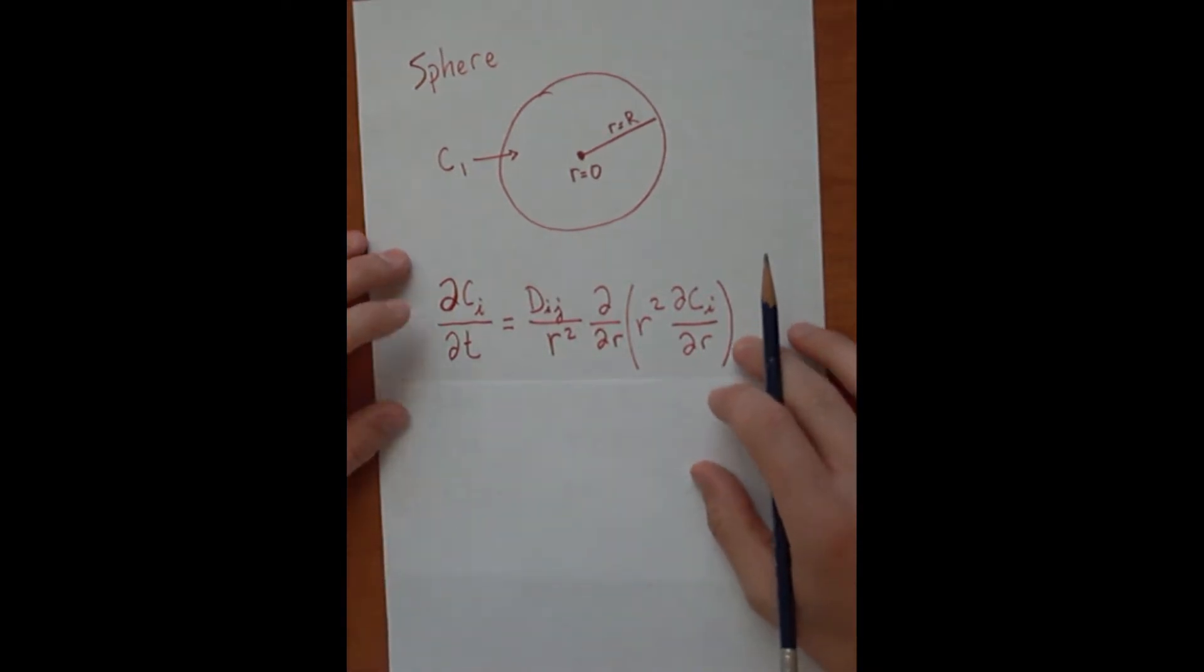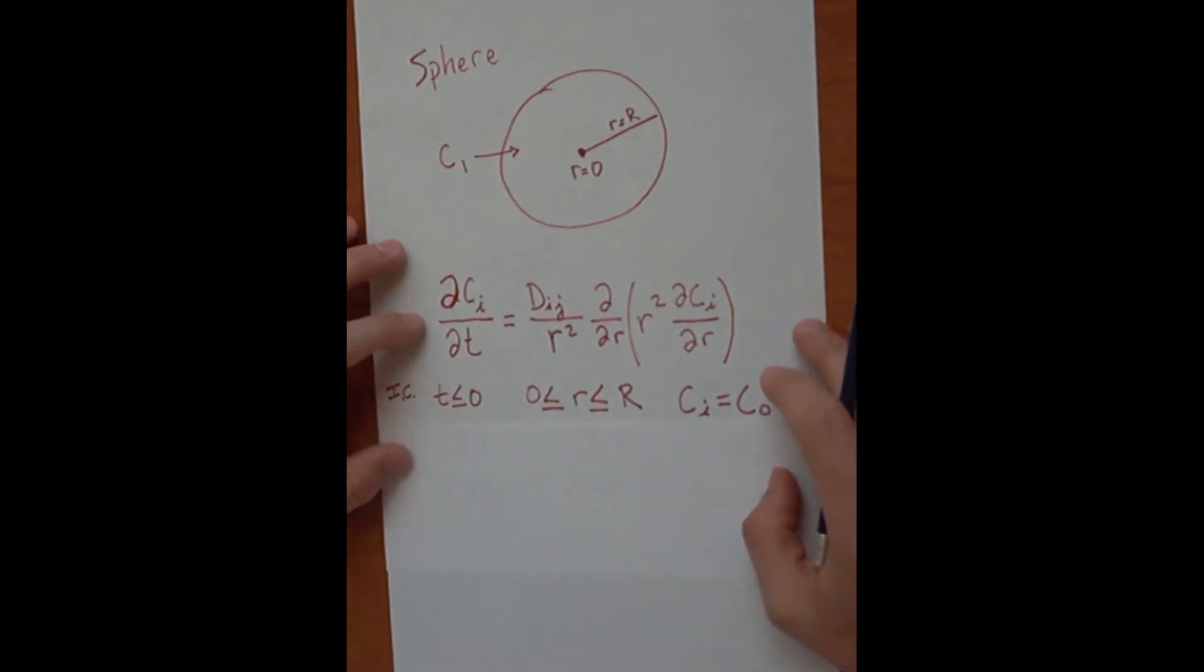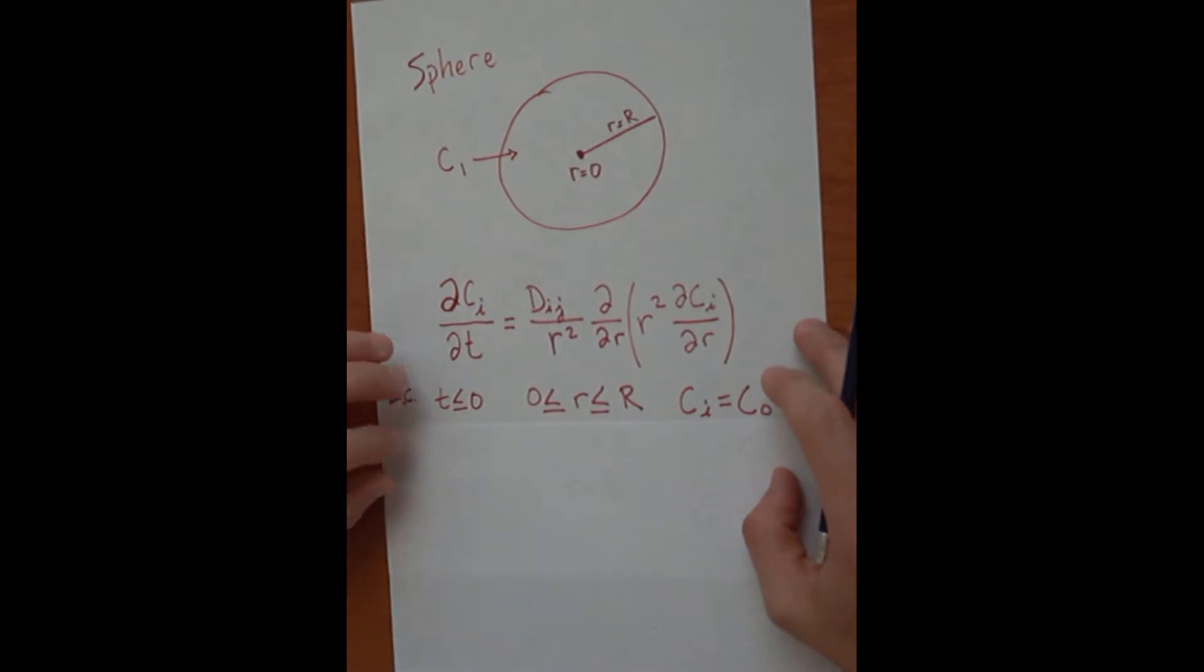From Fick's second law here for spherical coordinates, we can then set up our initial condition and our boundary conditions to be able to solve this partial differential equation. The initial conditions are like the same thing with the slab. The initial condition within the sphere initially has a concentration of C0 between R equals zero and capital R.